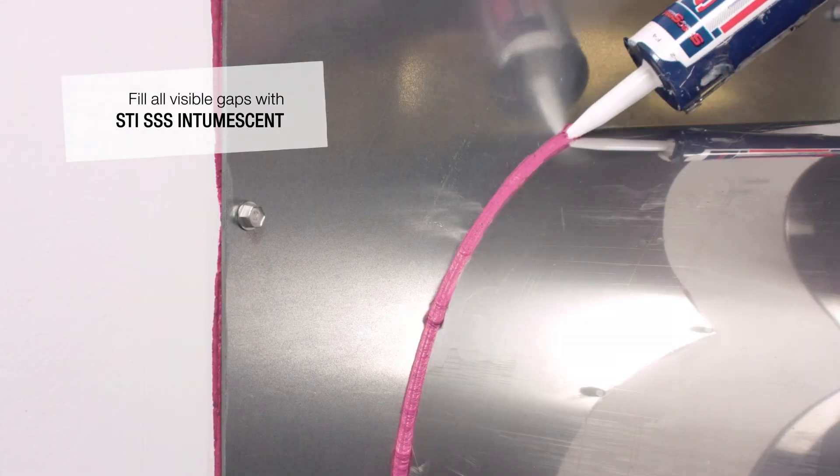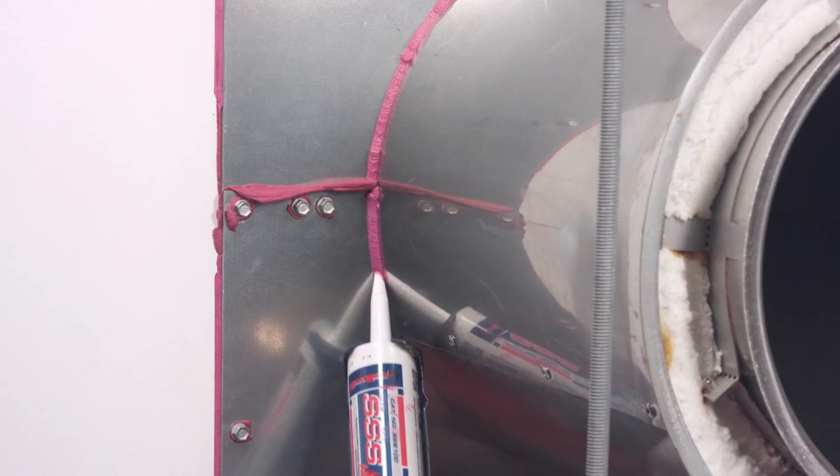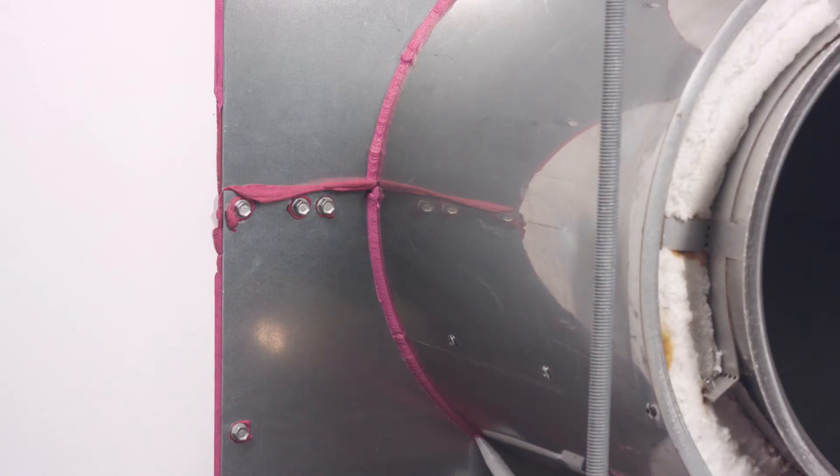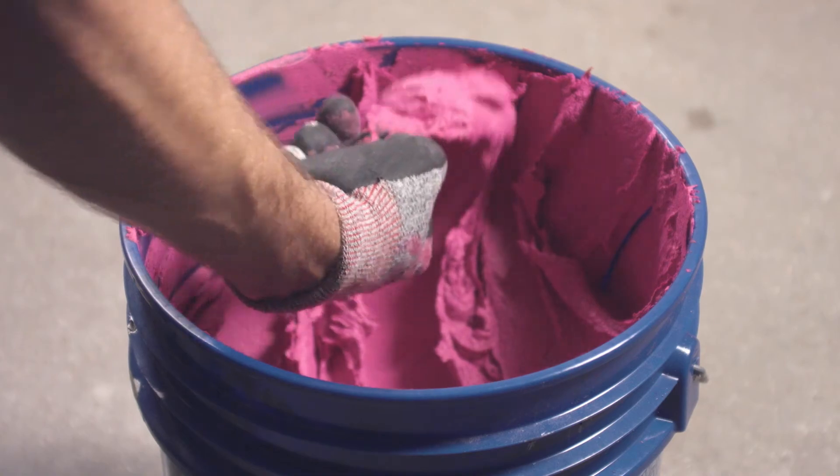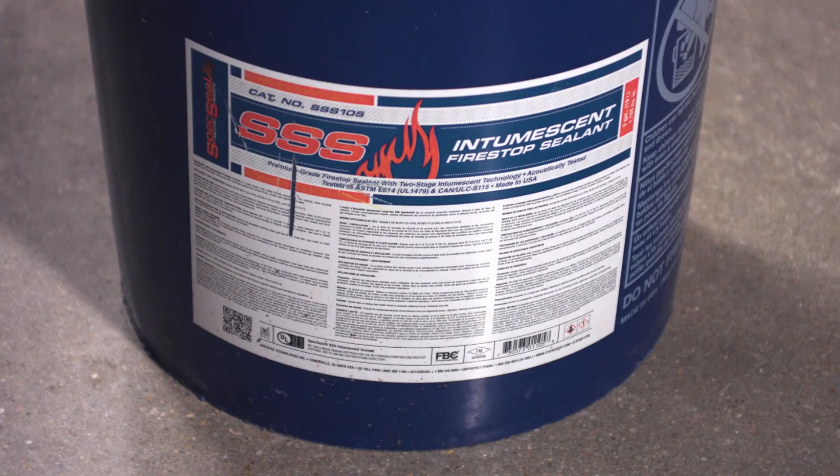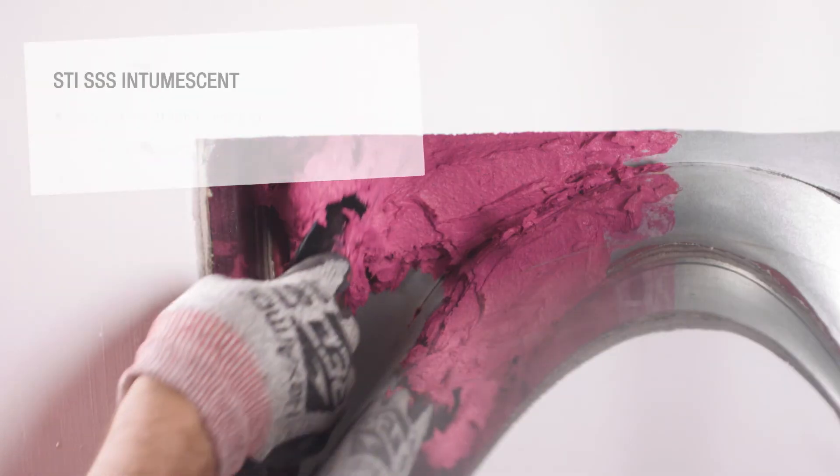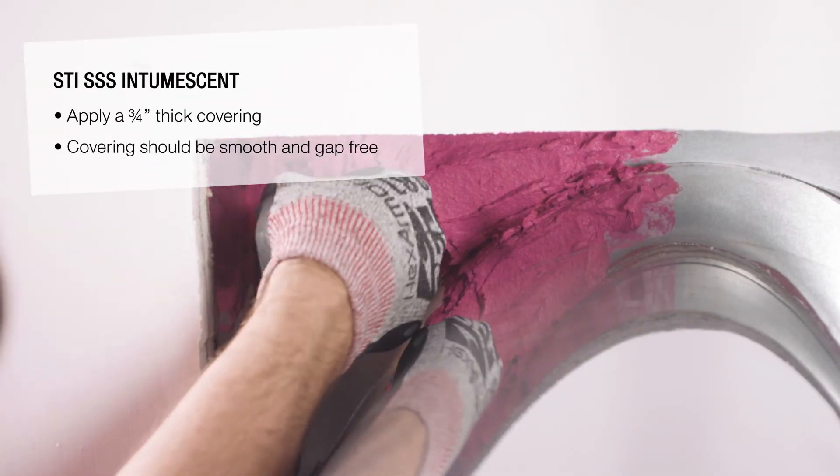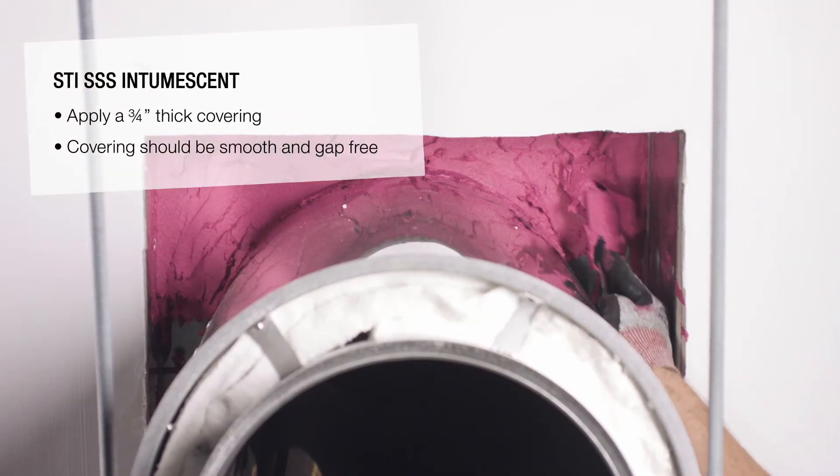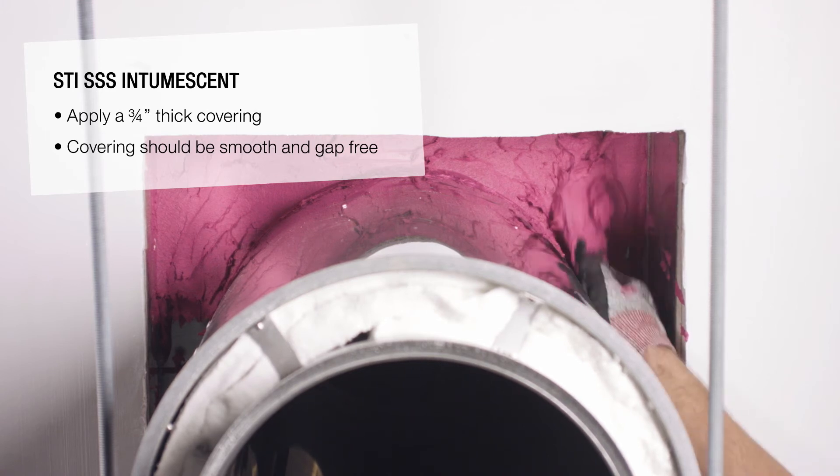Be sure to fill all visible gaps with generous amounts of intumescent. Next, apply a three quarter inch covering of intumescent sealant to the inside of the fireplates installed on the backside of the wall. The sealant should be smooth and without any gaps on the edges of the opening or outside of the duct.